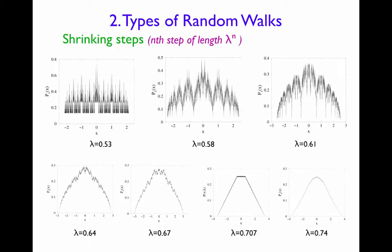Another example that's dear to my heart is the example of shrinking steps. That is, a random walker is getting lazier and lazier as time is going on, and the length of the nth step is lambda to the n, where lambda is less than 1. An amazing aspect of this type of random walk is the diversity of types of probability distributions as a function of the shrinking factor lambda.